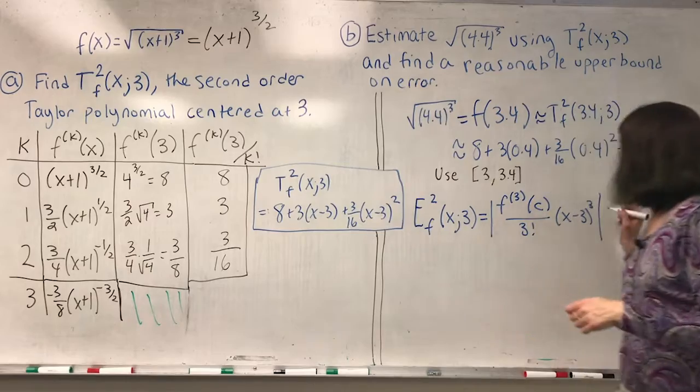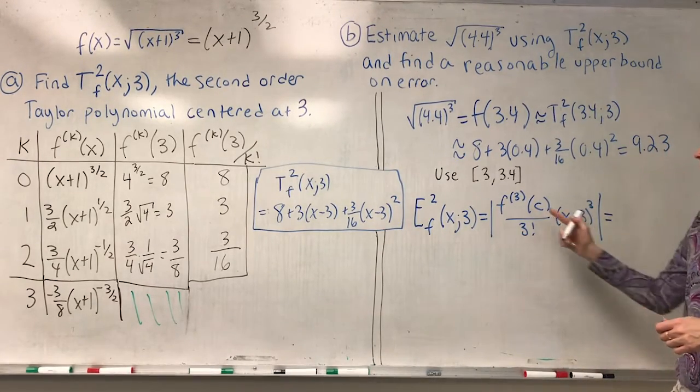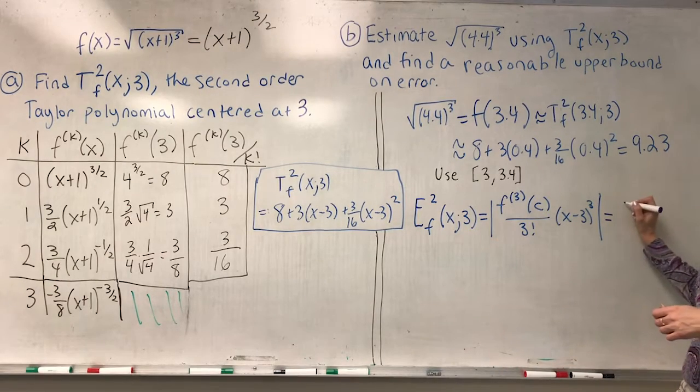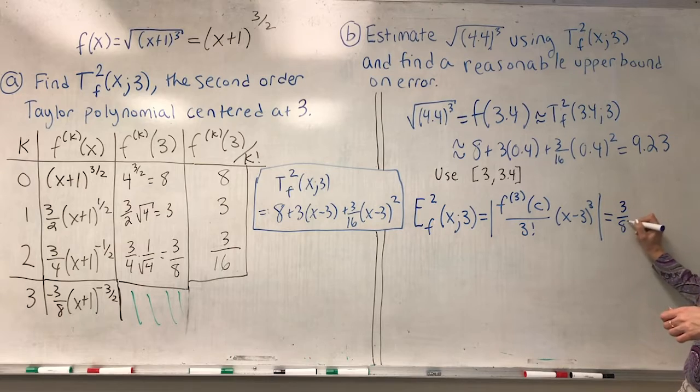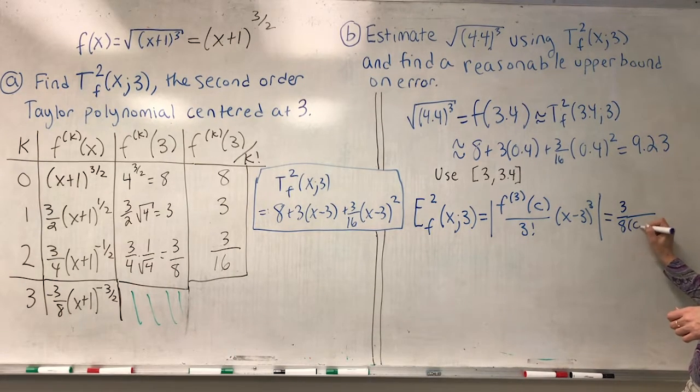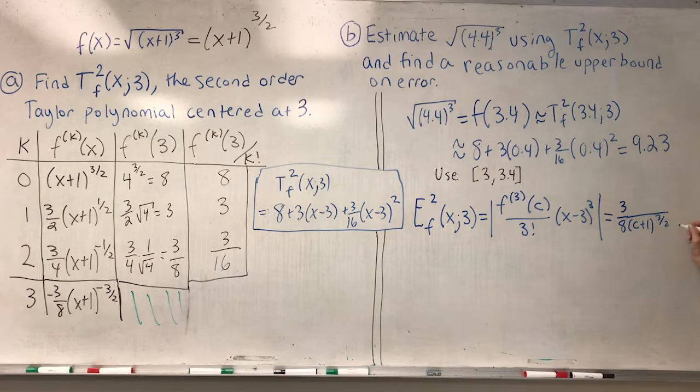Now, this equals, let's fill in, this is why I calculated this derivative. When I take absolute value, I get 3 over 8. In my denominator, I have c plus 1 to the 3 halves. In my numerator, well, I have one more thing here, which is a 3 factorial.